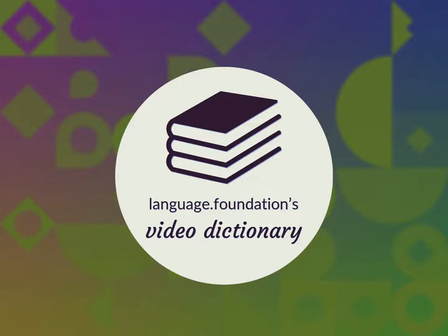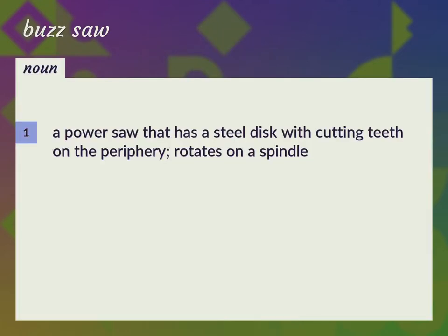Language.Foundation's Video Dictionary, helping you achieve understanding. A power saw that has a steel disc with cutting teeth on the periphery, rotates on a spindle. Circular saw.